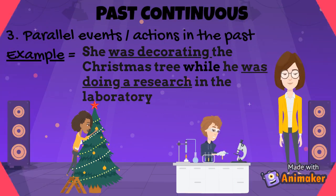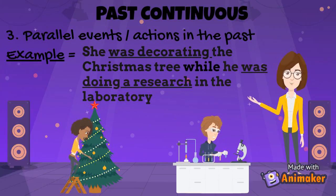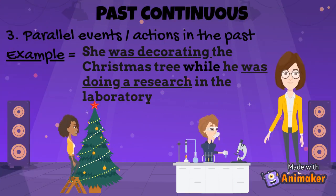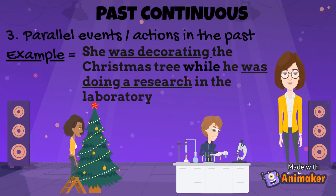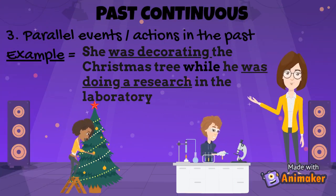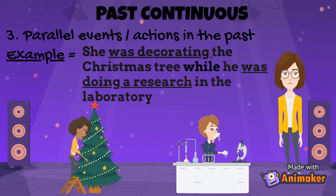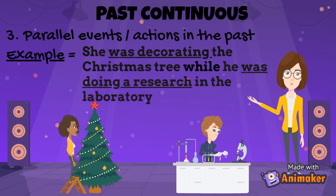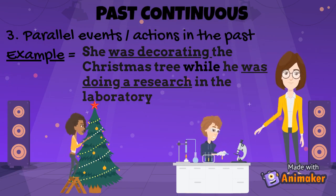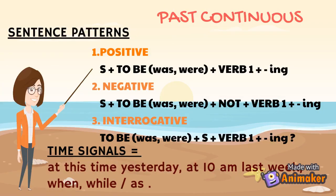Past continuous tense can also be used to describe parallel events in the past. For example, she was decorating the Christmas tree while he was doing research in the laboratory. Here are the sentence patterns for past continuous tense.